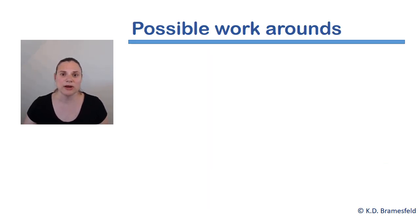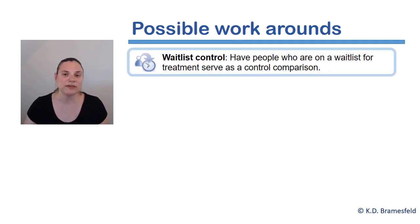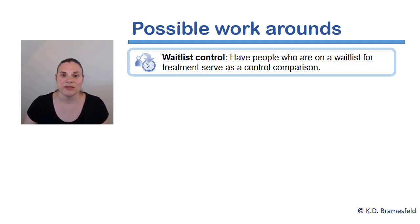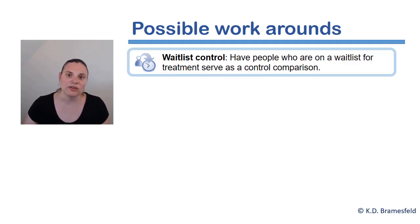So what are some possible workarounds when random assignment to conditions is not possible? Well, one possibility is to use what's called a waitlist control. A waitlist control is where you have people who are on a waitlist for treatment serve as a control comparison. In Ontario, for example, if you want to receive certain medical benefits such as mental health benefits, you may be on a long waitlist in order to receive those benefits. These waitlists are not ideal and reflect larger structural problems. But given their reality, researchers can use those waitlists in order to create natural control conditions in order to compare to people who have reached the treatment stage.